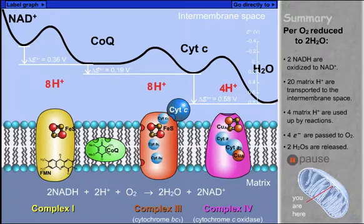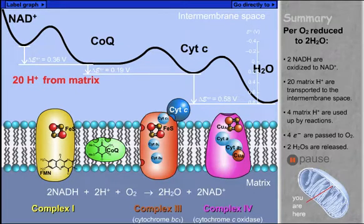For each molecule of oxygen reduced, 20 protons are transferred from the matrix to the intermembrane space. In addition, four matrix protons have been used to build two waters from the oxygen. Four electrons are transported, requiring two NADH molecules as input.